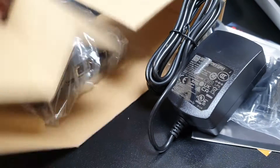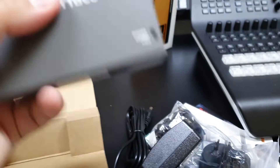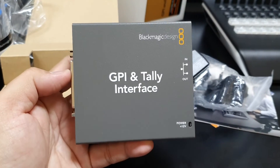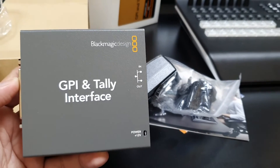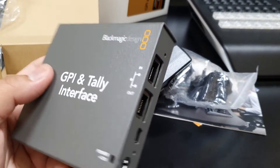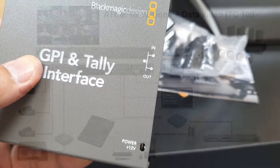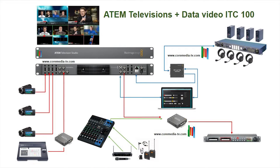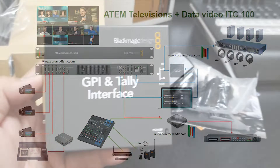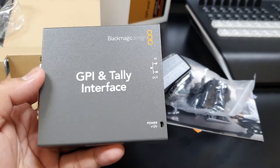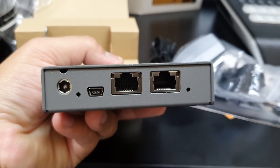The GPI Telebox sits in between the ATEM switcher and the control panel on the Ethernet LAN. It has two LAN ports, one labelled IN and one labelled OUT. The IN port is connected to the control panel or computer. The OUT port is connected to the ATEM switcher. The USB port is just for firmware updates.